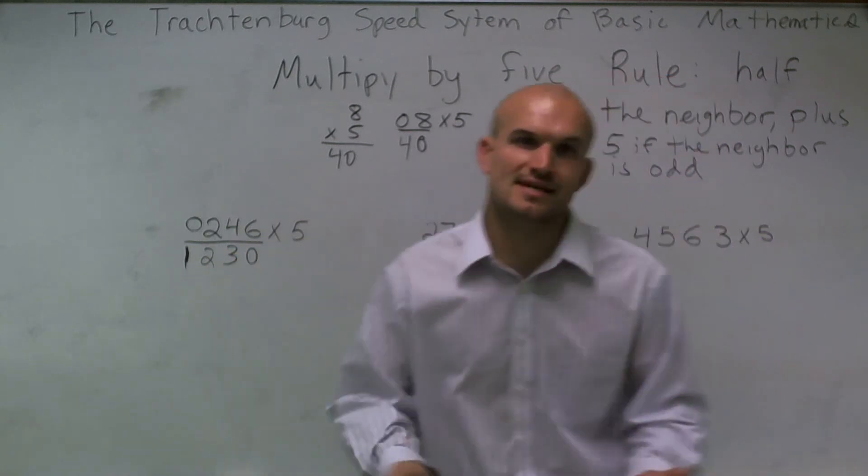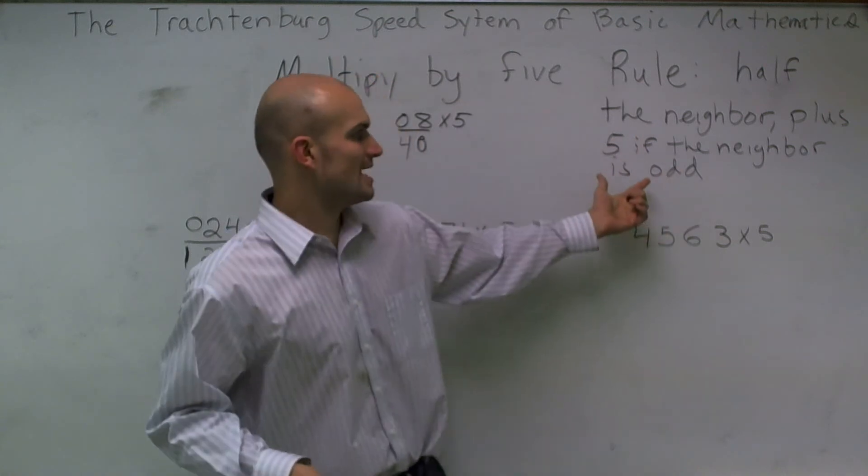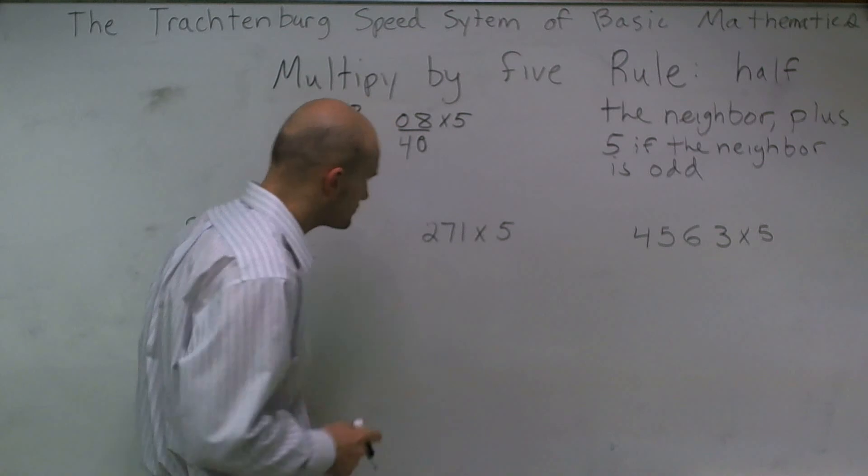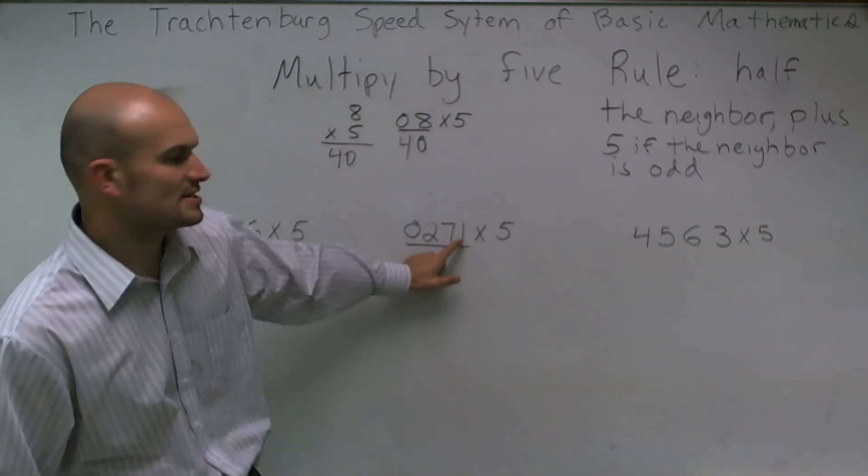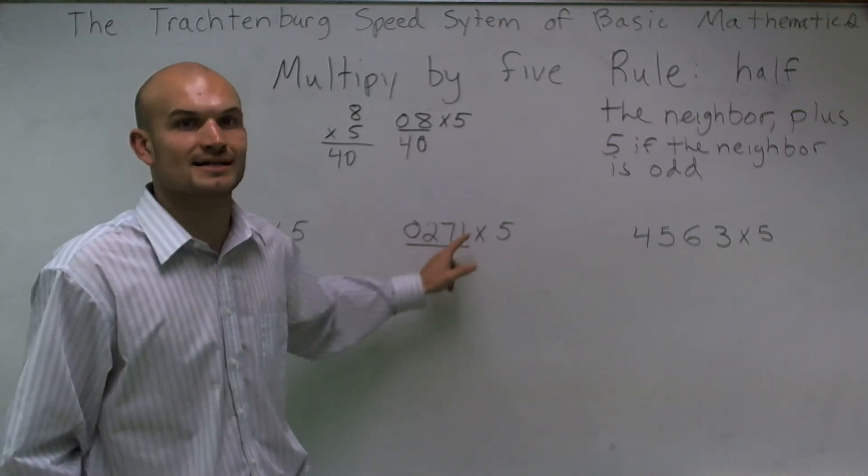Now when it gets to an odd, like I said, now we have to add the rule of still taking half from the neighbor, but then also adding plus 5 if the neighbor is odd. So first thing, we're going to put a 0 and drop down. Now you notice my 1 is odd, so therefore, I need to make sure that I could take 0, which is my neighbor.